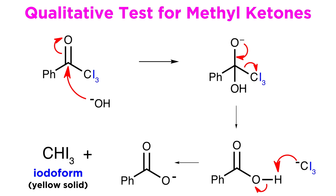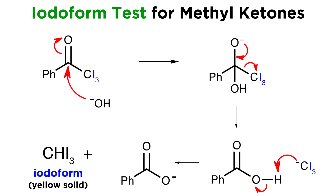As an additional application, when performing this with iodine, it can act as a qualitative test to see if an unknown substrate is in fact a methyl ketone, because the iodoform that is produced is a yellow solid that is extremely easy to identify. This is called the iodoform test.